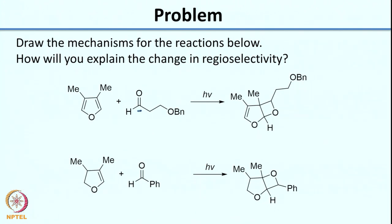Now I would like you to work on 2 reactions that are shown. Both are photochemical — they involve generation of a biradical on the C=O, and once you generate the biradical it can interact with a double bond to give the 2 products shown. I would like you to draw the mechanism for both, and once you draw the mechanism, explain why there is a change in regioselectivity when you change the molecule from a furan to a dihydrofuran. The difference is that furan has 2 double bonds whereas dihydrofuran has only 1 double bond. Please press pause and solve both problems.